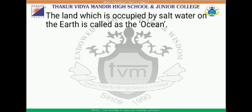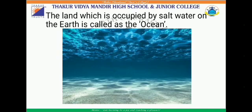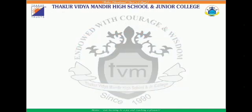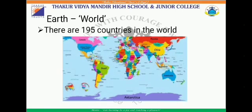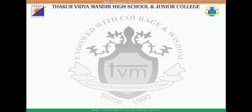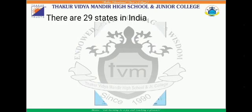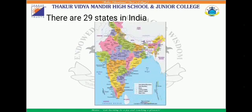The land occupied by salt water on the earth is called an ocean. The other name for the word earth is world. There are about 195 countries in the world. There are many states in each country. The state in which we live is Maharashtra, and there are 29 states in India.